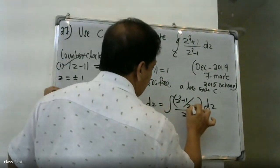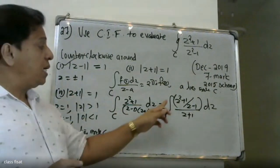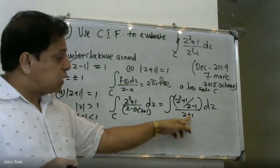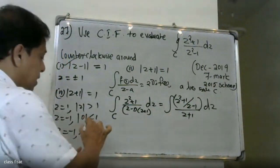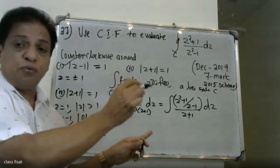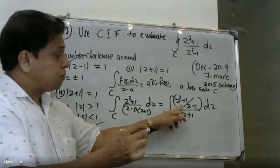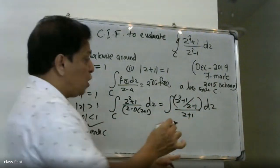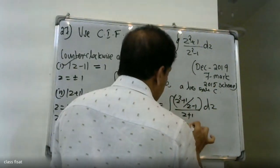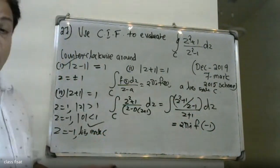Rewriting: the integrand is (z² + 1) / (z - 1), divided by (z + 1). Since z = -1 lies inside C, we apply the formula and evaluate 2πi · f(-1).